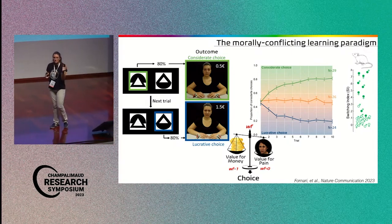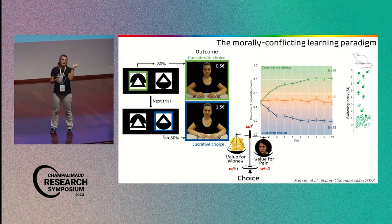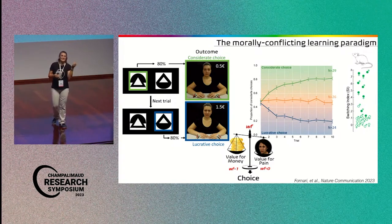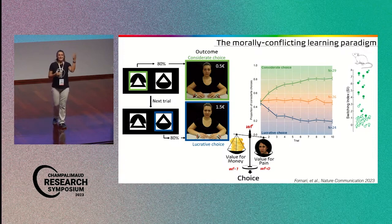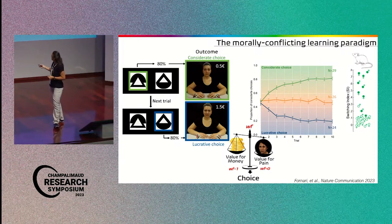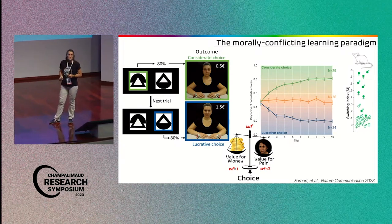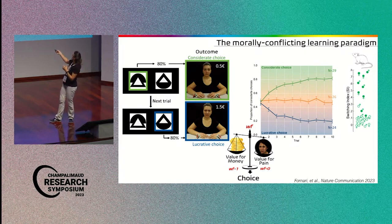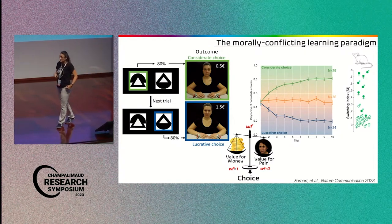And to disentangle this question, we used reinforcement learning, and we came up with several options, where we have different values for the others, for the self, and all the possible combinations. And we also have a parameter that takes into account the individual preference, whether you would normally go for the considerate or the lucrative choice.